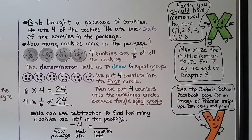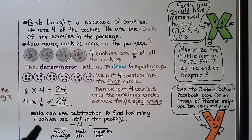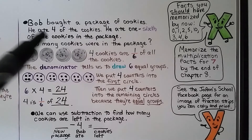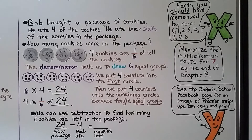So we know when the package was brand new, there were 24 cookies in it, and 4 of them is one-sixth of the package. We can use subtraction to find how many cookies are left after he ate those 4 cookies. We know there were 24 cookies in the package. We take away the 4 that he ate — 24 minus 4 is equal to 20 — so there are 20 cookies left in the package.